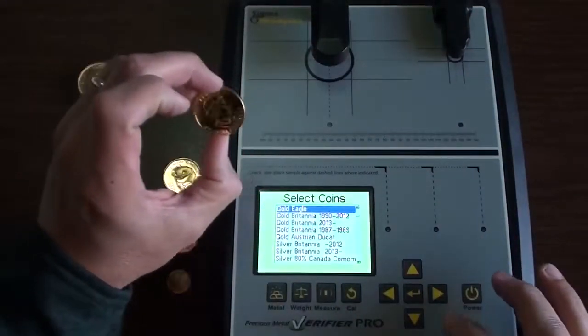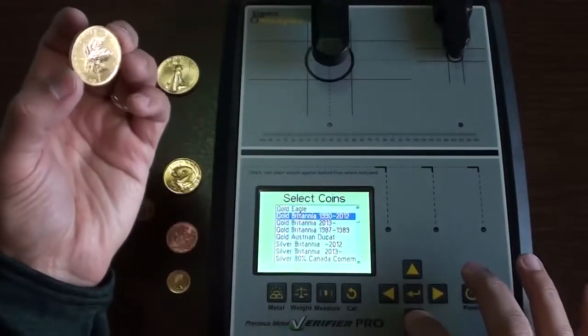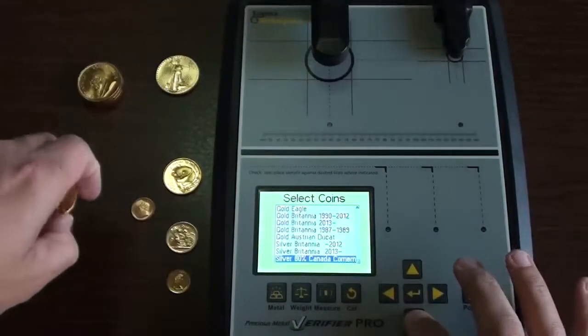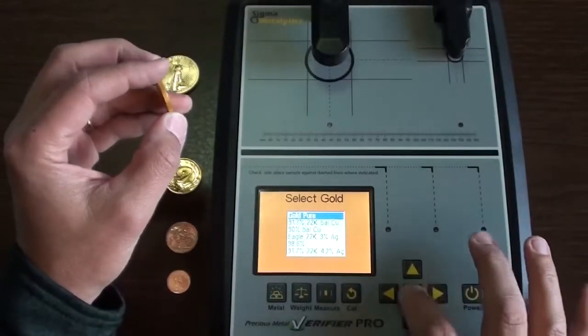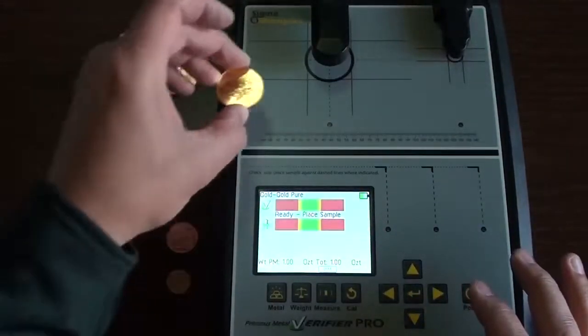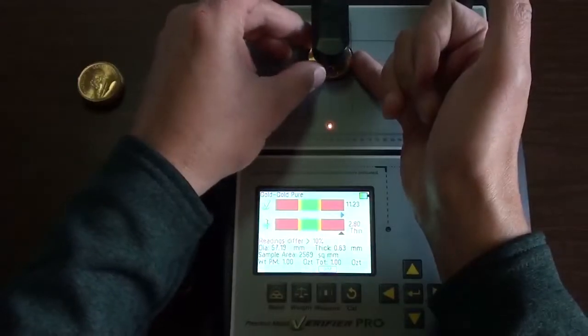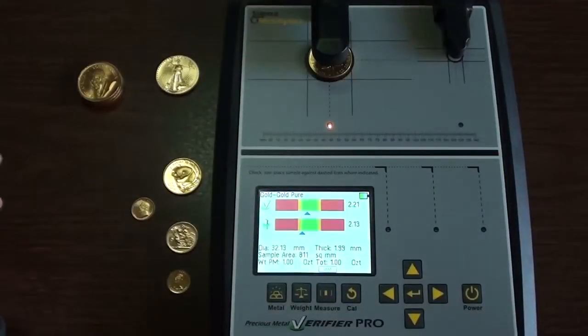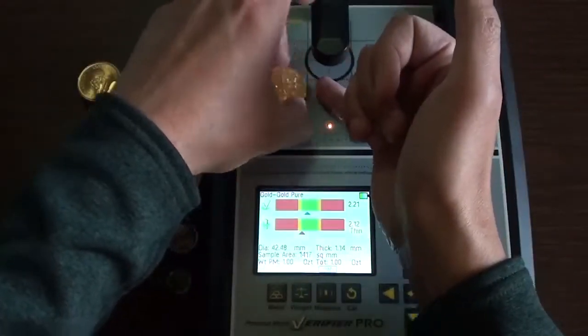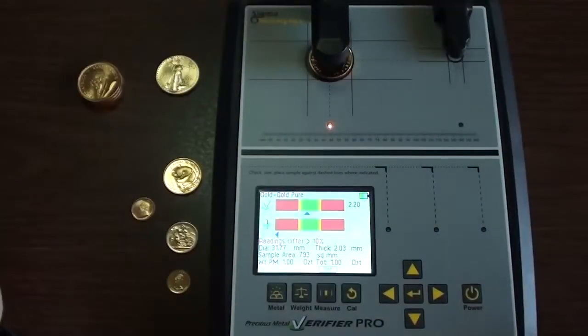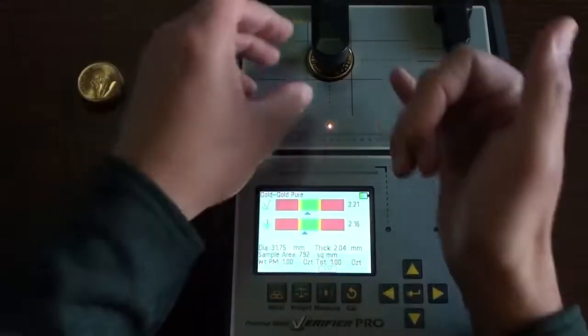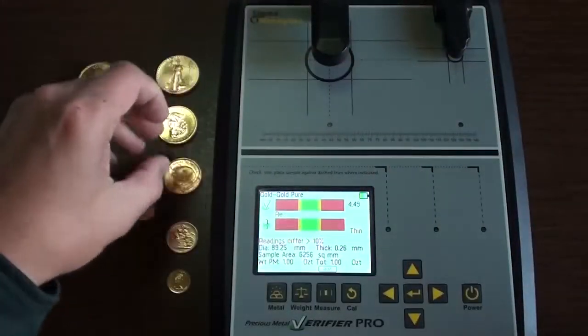They don't have a reading for the Canadian Maple Leaf, which kind of surprised me. So you just have to put it in as solid gold. So I'm going to go over there to the gold and put pure gold. Of course, this is a four-ninths fine. I would anticipate it's going to be a solid reading. And boom, pretty solid there. The through was a little weak on that one. I'm not really worried about that at all. On the flip side, again, solid reading. So that's a good Maple.